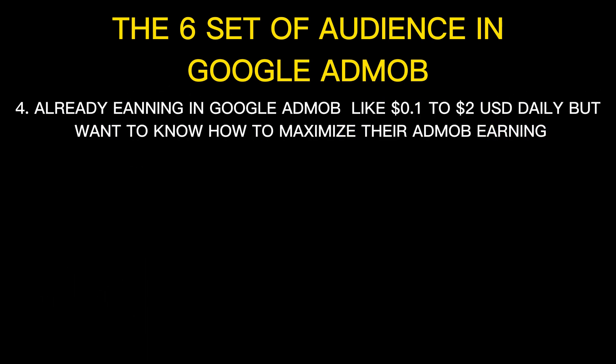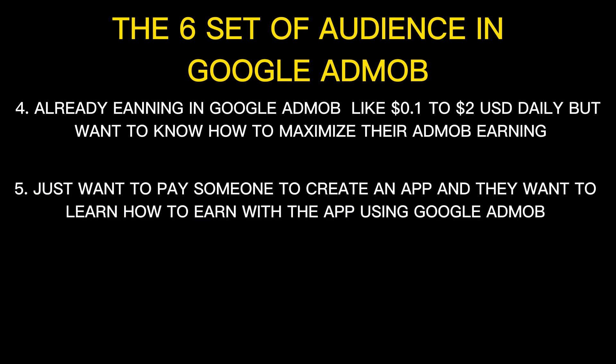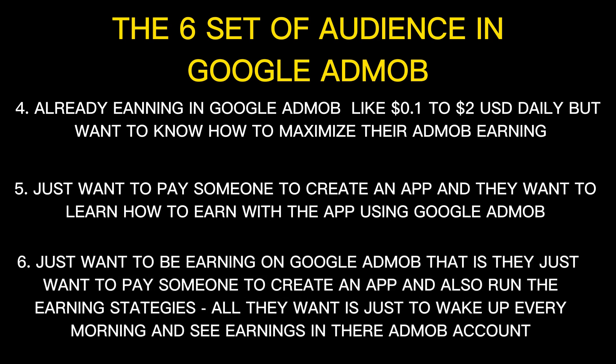The fourth set are those already earning in Google AdMob — like one cent to two US dollars daily — but want to know how to maximize their earning to $50 to $100 per day. The fifth set just want to pay someone to create an app for them and learn how to earn using this app in Google AdMob. The sixth set just want to pay someone to create the app for them and also run the earning strategy.